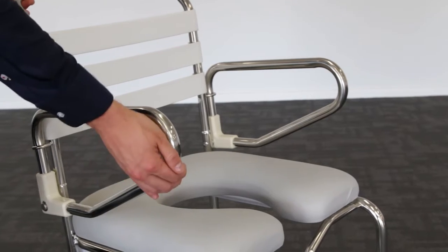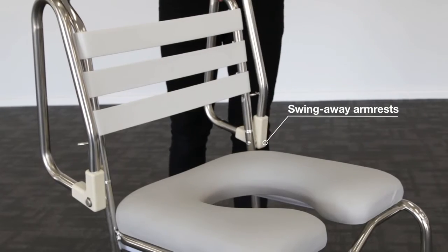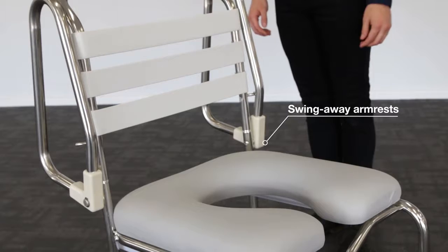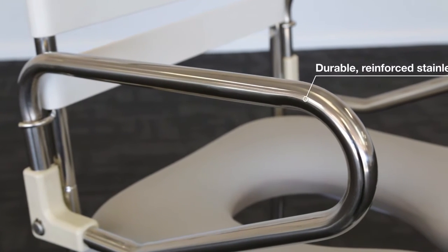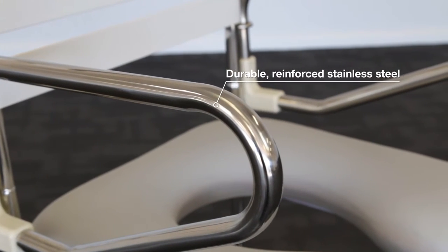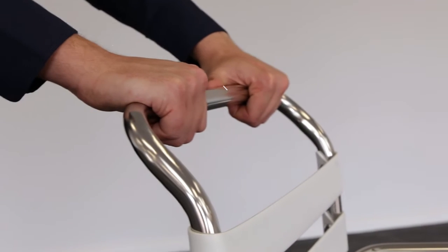The commode comes with a 200 kilogram weight capacity. Both armrests swing upwards allowing for easy side access to the commode. The durable frame is made from reinforced stainless steel, and moving the commode is easy with the convenient push bar.